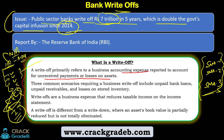When the loan becomes NPA, the bank writes off that amount. By doing this, the bank is no longer liable to pay income tax on it. Write-offs are business expenses that reduce taxable income on the income statement. However, a write-off doesn't mean the bank is not going to recover this amount in future. The bank is still trying, and has multiple channels to recover that amount.